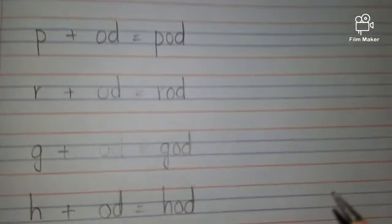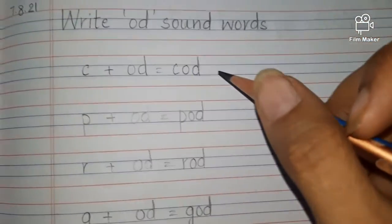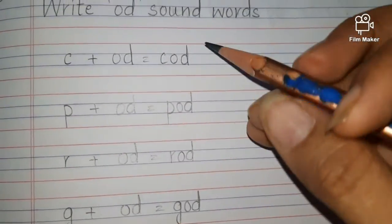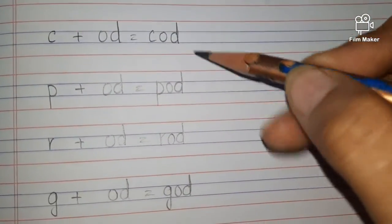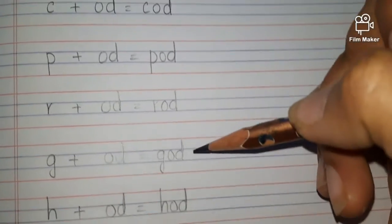So let's go through all the OD sound words we have written: COD, POD, ROD, GOD, and HOD.